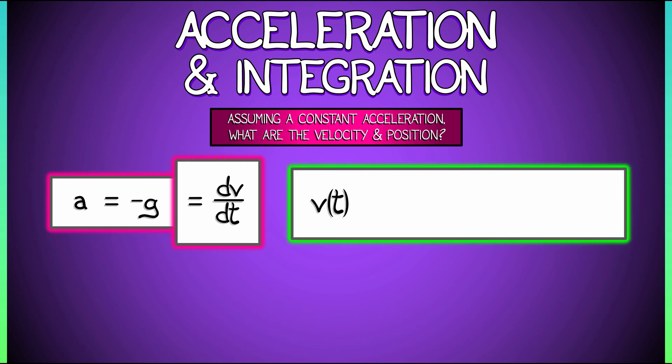So the velocity, v as a function of time t, is the integral of the acceleration, minus g, with respect to t. Now, what function has derivative a constant? Of course, it's just that constant times t. So the velocity is minus g times t. Aha! Don't forget the constant. Plus c.